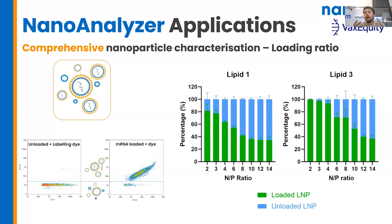This is a very simple way to understand what's happening with our particles — we have too much lipid and not enough RNA. The particles that we're forming are empty and can be less therapeutically active.